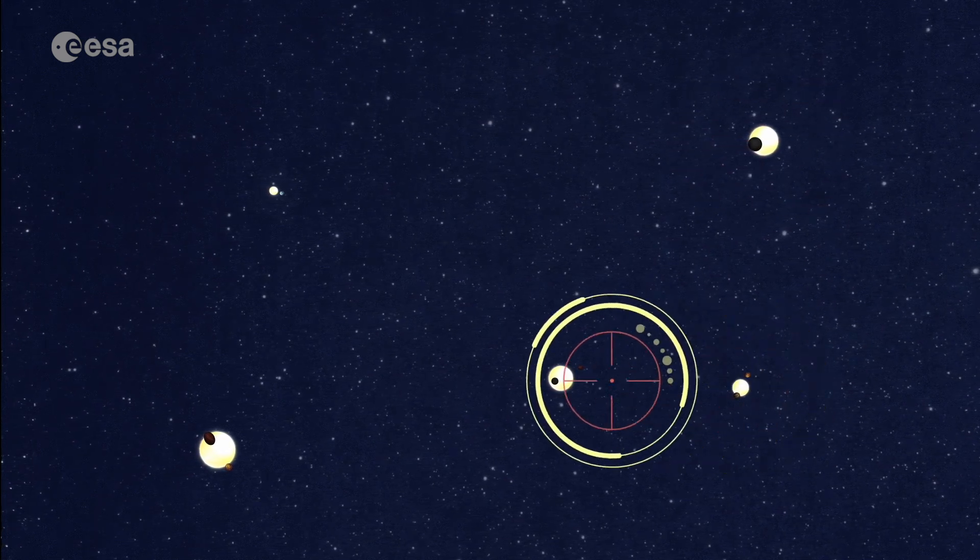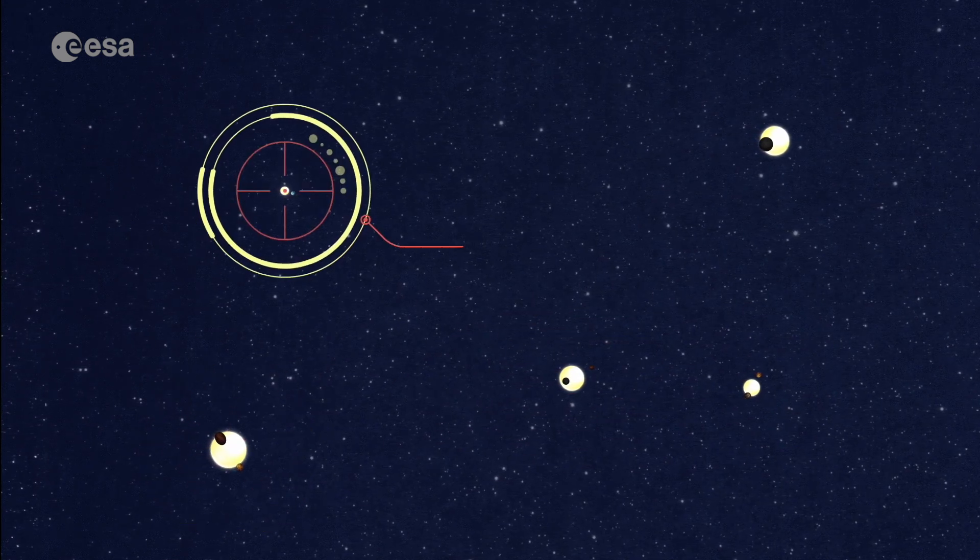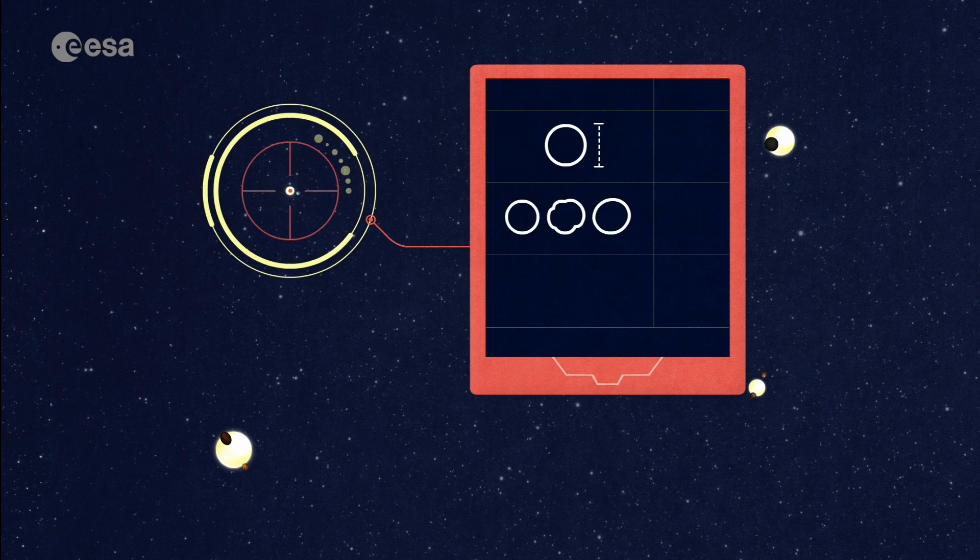Finding these planets is a challenge all in itself, but getting to know some of the characteristics that make them so diverse, their sizes, shapes and what they're made of, is an even greater one.